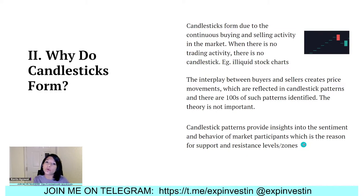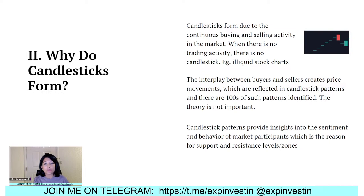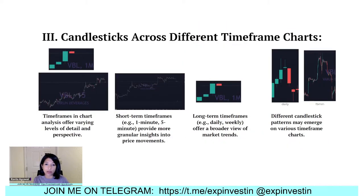If a candle has a long lower wick, it means buyers have the upper hand; a long upper wick means sellers have the upper hand. This is also why support and resistance zones get formed — the power dynamics in the stock market do not change very quickly. There is a period of pushing and pulling before prices decide to reverse in favor of the winning party, and that is why we see support and resistance zones form, often at the same level where the change of hands or reversal happens.